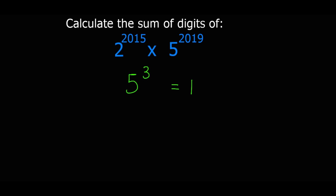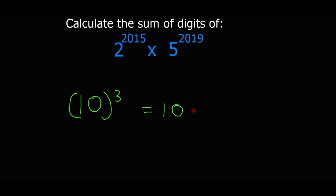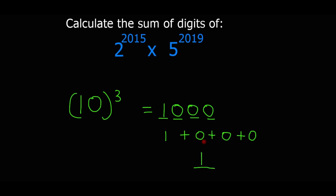Let's take another example. Let's say we have 10 to the exponent 3. We know that 10 to the exponent 3 is 1000. To find the sum of digits we add: 1 plus 0 plus 0 plus 0, and the answer is 1. So this is the sum of digits of 10 to the exponent 3.